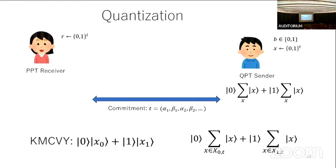If this quantum state were equivalent to a state with only single x0 and x1, our construction would be finished, because we could run the KMCVY protocol. Unfortunately in general this state is not equivalent to that, because here we have many superpositions — so this is not yet a proof of quantumness.